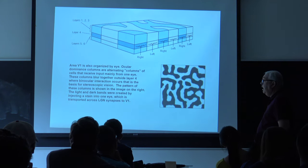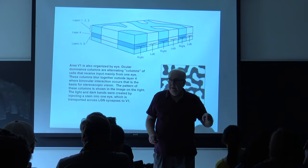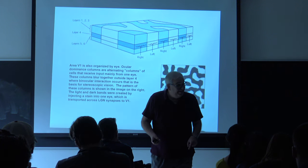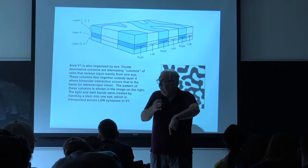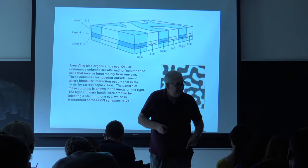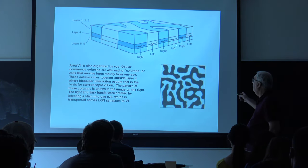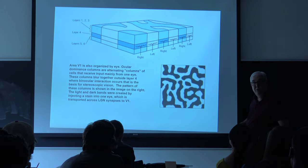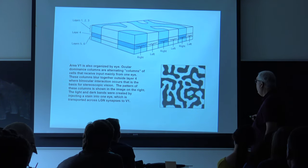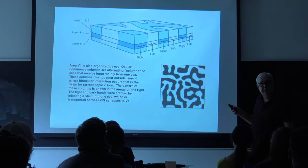Another thing noticed in these columns is that some cells are primarily sensitive to the right eye and others primarily to the left eye — and the brain keeps those separate too. So not only do you have columns that differentiate different orientations, you also have columns that differentiate the eye of origin. There are right eye columns and left eye columns. If you inject a dye into one of the eyes, you can visualize this pattern of ocular dominance columns.